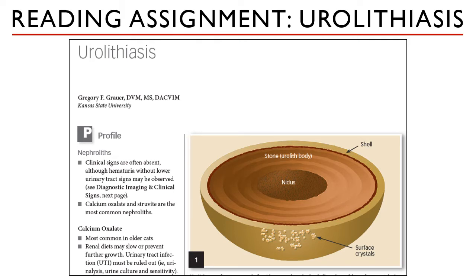Urinary obstruction is a common condition seen in both dogs and cats. Urolithiasis is the top most common cause of acute obstruction. In dogs it is urolithiasis, while in cats obstruction can be caused by mucus plugs, crystalline plugs, or stones. Other causes in dogs include neoplasia, polyps, scar tissue strictures, or other functional abnormalities.